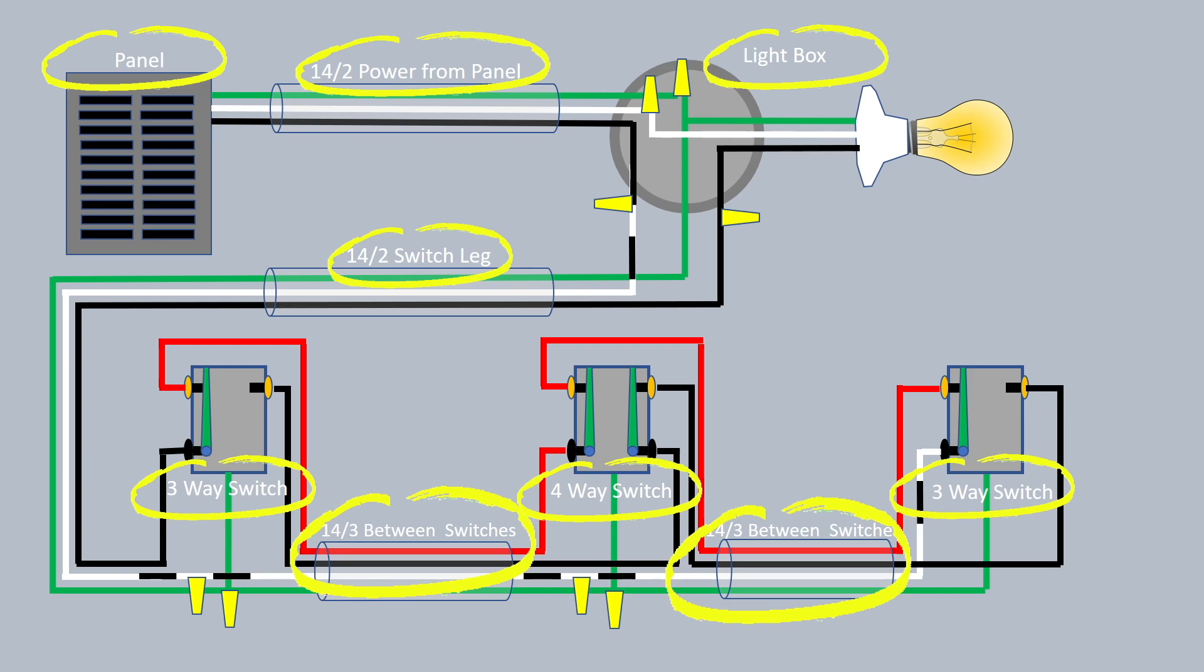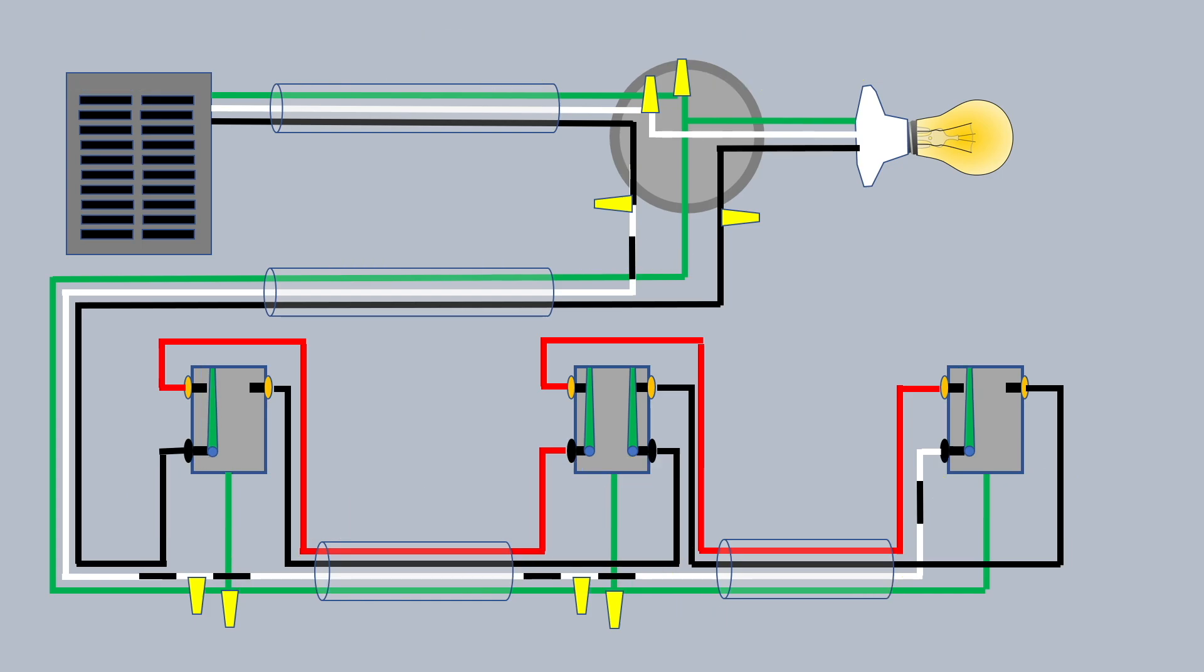You also notice on that white wire I have little black lines. I'm circling them right now. You do that with a piece of black tape on that white wire because that white wire, which is commonly viewed as a neutral wire, is actually a hot wire on a switch leg. And so you want to designate with that black tape that that wire could be hot.